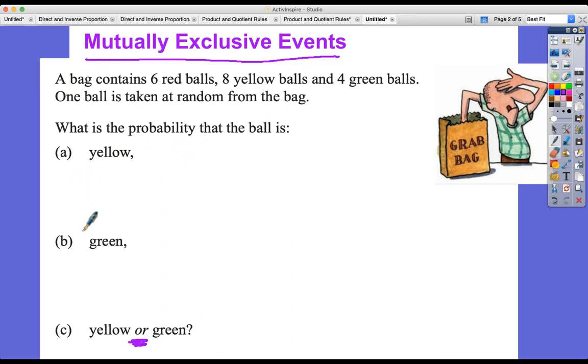But first of all, let's do a and b. These are really straightforward. So a bag contains six red balls, eight yellow balls, and four green balls. One ball is taken at random from the bag. You can see the man here doing so. What's the probability the ball is yellow? Using the proper notation, probability of yellow is equal to, well, there's eight yellow balls out of a total of eight plus four is twelve plus six, eighteen.